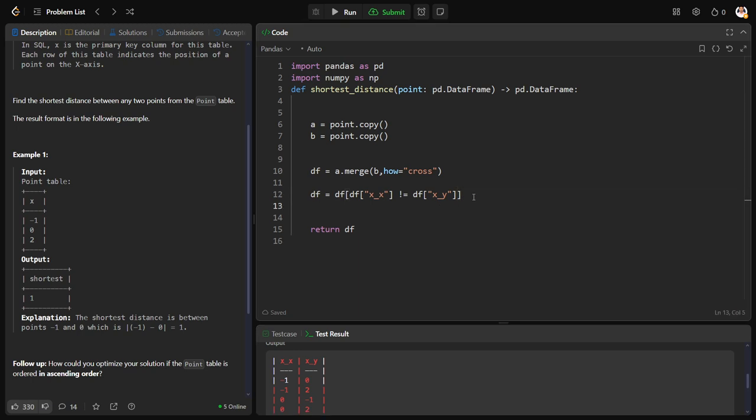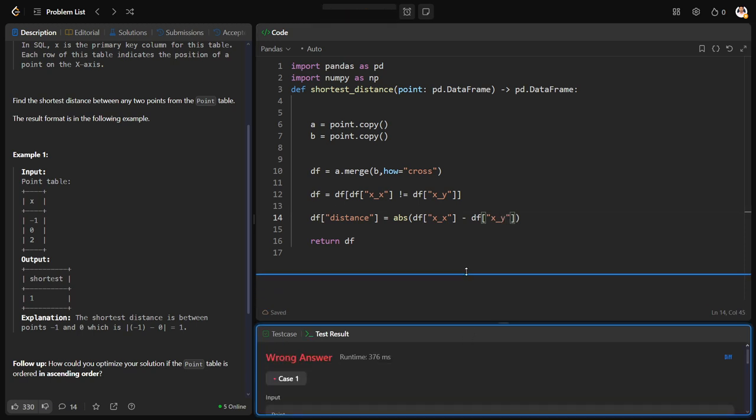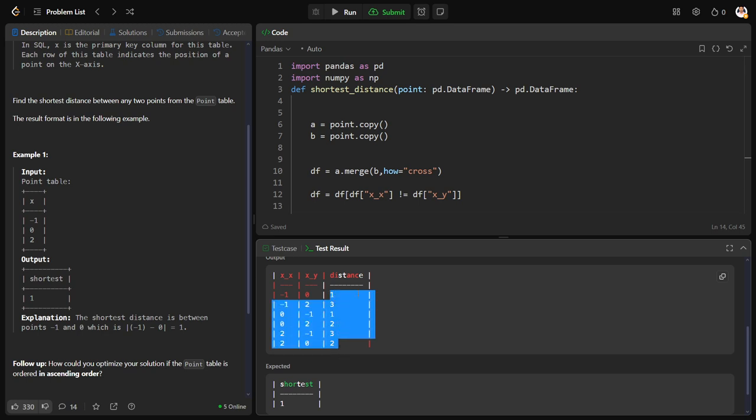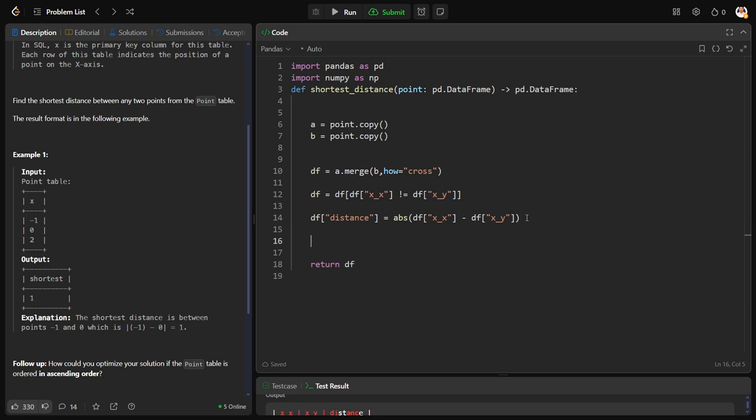Now what I need to take? I need to take the minimum value. First I need to calculate the differences. So let me say df distance equal to absolute value of df of x_x minus df of x_y. Let me show you. Now we have the new distance column.